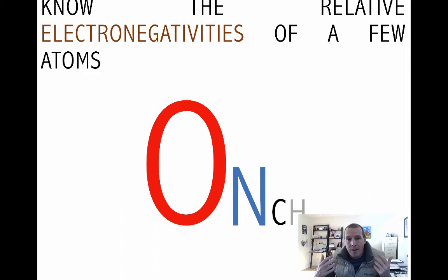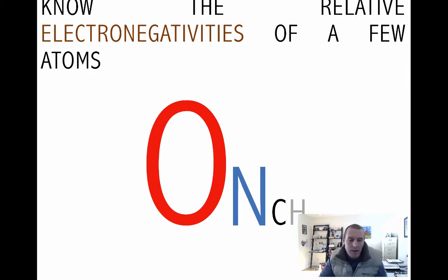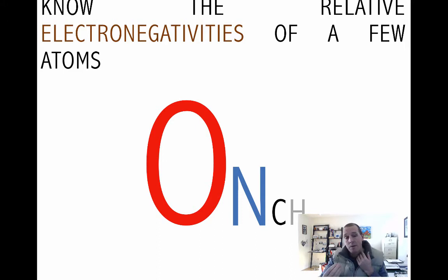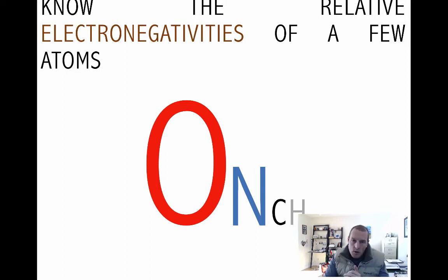Here's something I do want you to memorize: the relative electronegativities of four atoms — oxygen, nitrogen, carbon, and hydrogen. I've color-coded these so you get used to seeing them: oxygen is usually red, nitrogen is usually blue, carbon is usually black, and hydrogen is usually white — shown here in gray since it's on a white background.